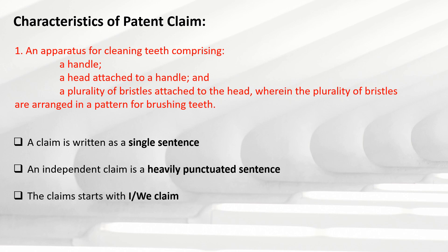The third characteristic states the claim starts with 'I claim' or 'We claim.' This is a mandatory requirement by the Indian Patent Office — whenever you write claims in an Indian patent application, it must start with either 'I claim' or 'We claim' depending on the applicant. If it's an individual, it's 'I claim'; if it's joint applicants or a company, it's 'We claim.' In other countries like the US, the claim starts with 'What is claimed is' — but in India, claims must start with 'I' or 'We claim.'